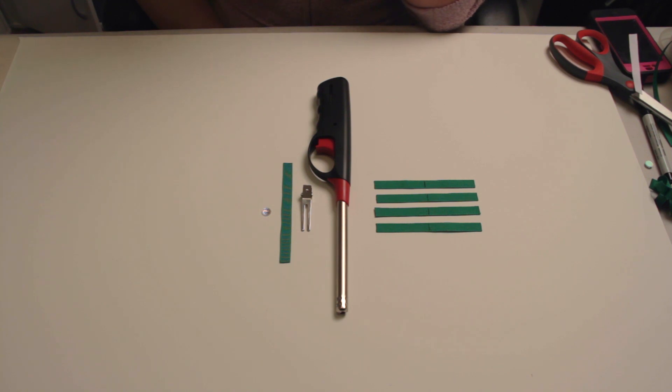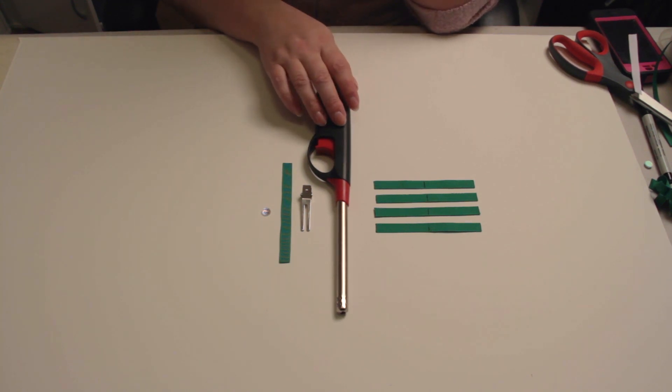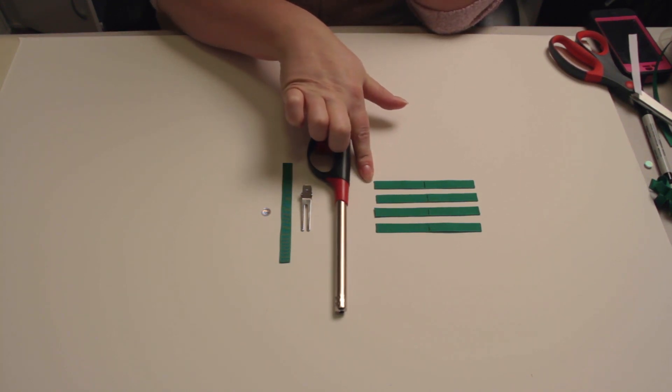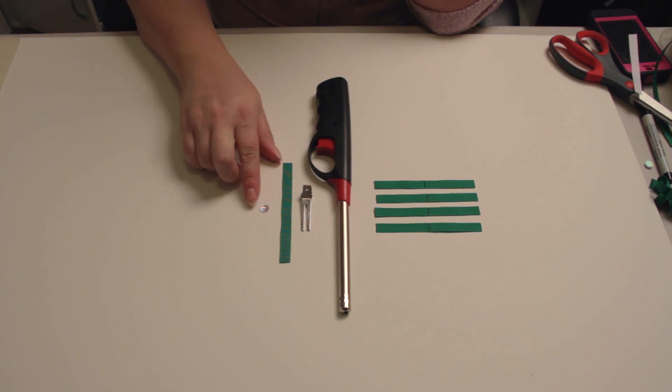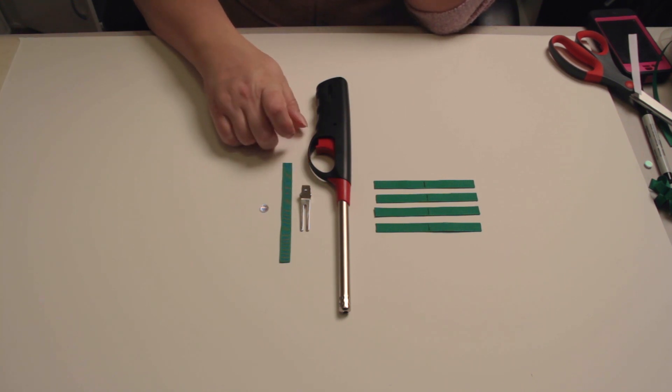For this project you're going to need a hot glue gun, a lighter to heat seal the edges of your ribbon, an embellishment, alligator clip, double prong or single prong, and a piece of ribbon cut four and a half inches long to cover the alligator clip.